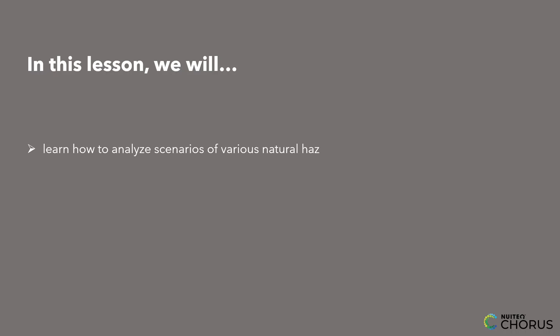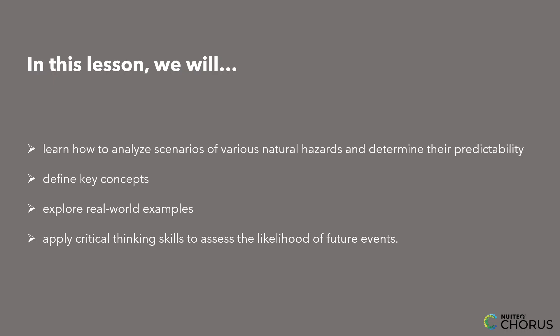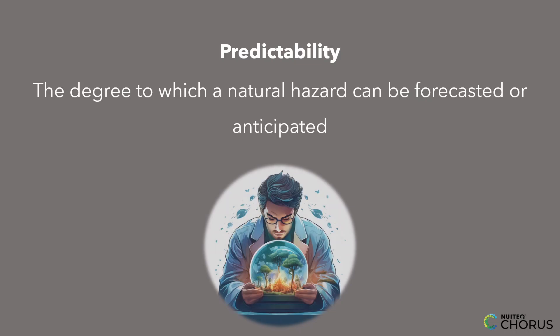In this lesson, we'll learn how to analyze scenarios of various natural hazards and determine their predictability. We'll define key concepts, explore real-world examples, and apply critical thinking skills to assess the likelihood of future events. But first, let's get familiar with an important term. Predictability refers to the degree to which a natural hazard can be forecasted or anticipated — it's like peering into a crystal ball to see what Mother Nature has in store for us.